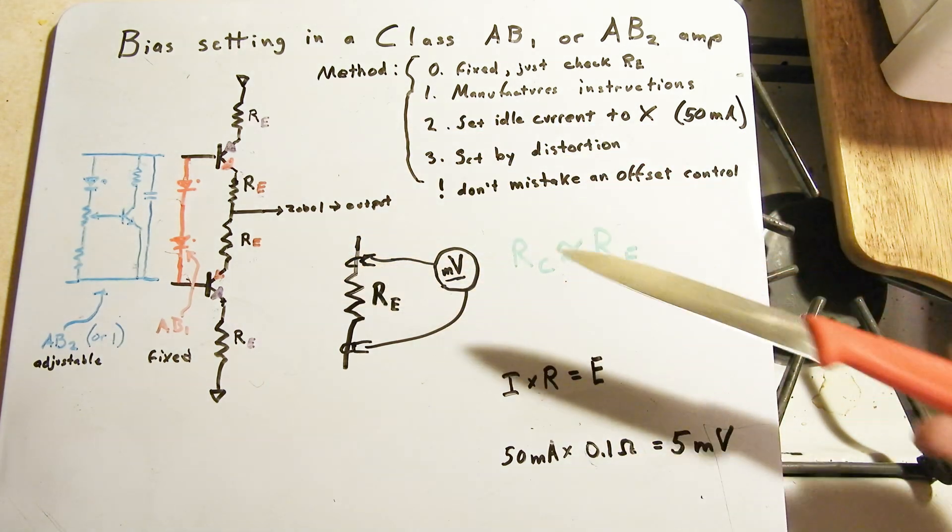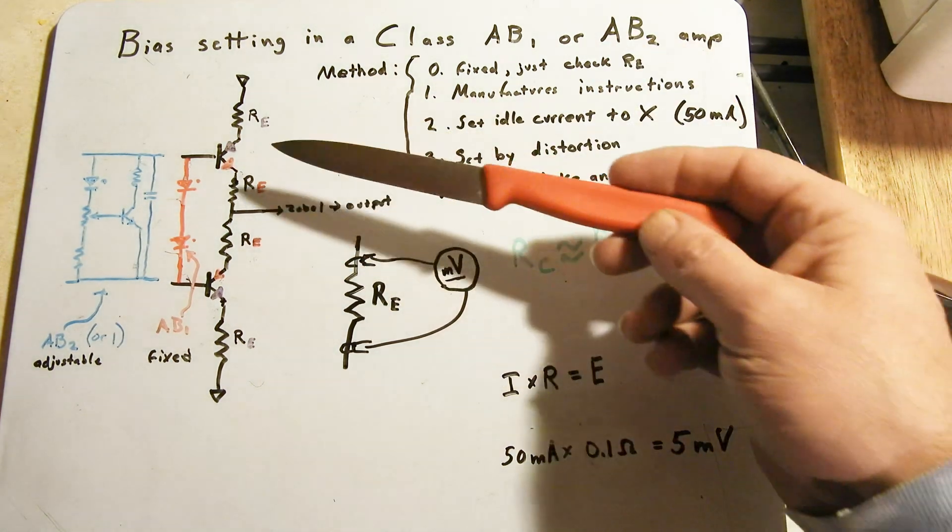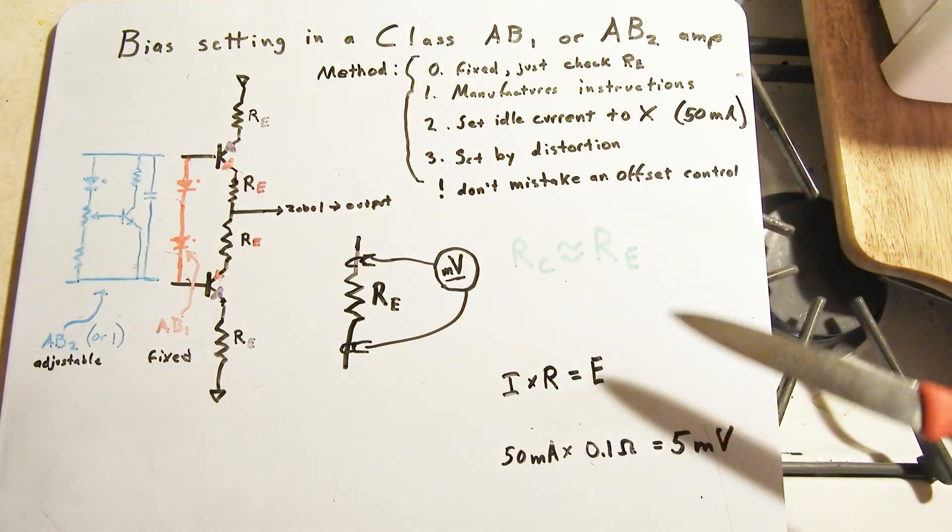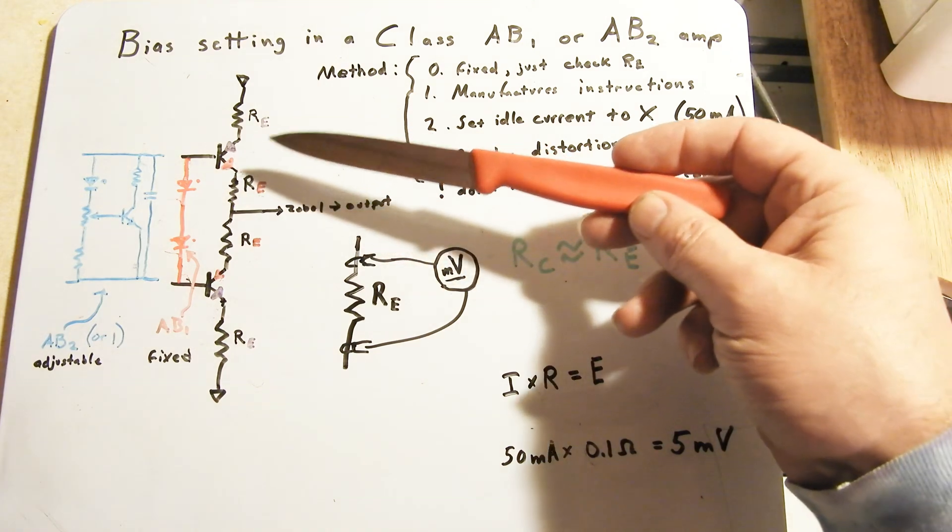It could be 0.22 or 0.39 or anything in that range. I'm going to use 0.1 in this example, but you can always just change it.